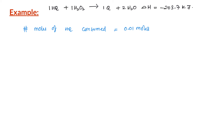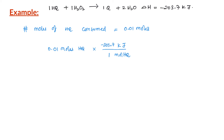According to the balanced equation, for every mole of hydroquinone consumed, 203.7 kilojoules of heat is released. In this reaction, 0.01 moles of hydroquinone is consumed. So the amount of heat released: we start with 0.01 moles of hydroquinone and multiply it with a conversion factor of 203.7 kilojoules per one mole of hydroquinone. Moles of hydroquinone cancel, and if we do the math, we get 2.037 kilojoules of heat released.